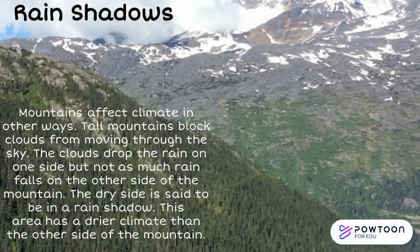Mountains affect climate in other ways. Tall mountains block clouds from moving through the sky. The clouds drop the rain on one side, but not as much rain falls on the other side of the mountain. The dry side is said to be in a rain shadow, and this area has a drier climate than the other side of the mountain.